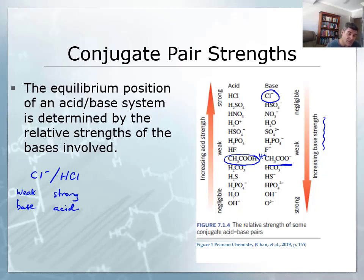But because this is kind of a mid-strength, middle of the table in terms of its base strength, then we know that the conjugate acid, the corresponding acid for the acetate ion, is also going to be relatively weak. Certainly not as strong as hydrochloric, but stronger than some other options.